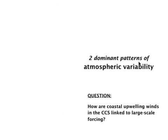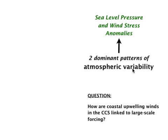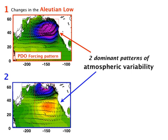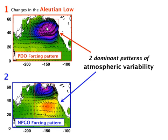There are two dominant patterns of atmospheric variability in the Northeast Pacific, evident in sea level pressure anomaly and wind stress anomaly. The first is associated with changes in the Aleutian Low — low sea level pressure and counterclockwise circulation — which is the forcing pattern of the PDO. The second dominant pattern is associated with a dipole structure in sea level pressure and intensification of winds near the North Pacific Current, which intensify the gyre-scale circulation. This wind forcing corresponds to the forcing pattern of the NPGO. This second pattern is distinct from the Aleutian Low variability, though often used interchangeably in the literature when discussing climate shifts.